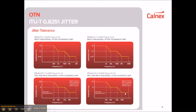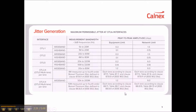Having covered the OTN tolerance masks, we move on to OTN Jitter generation. This table shows the Jitter generation and output Jitter limits. Unlike SyncE, OTN has two limits: one measured over a wide bandwidth, referred to as wideband Jitter, and the other measured over a narrower bandwidth at the higher end of the frequency band, referred to as high-band Jitter.